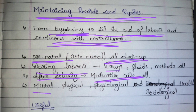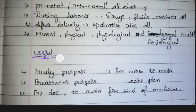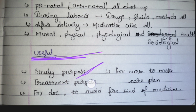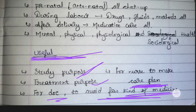We need to check and record mental health, physical health, physiological health, and sociological health — how the patient is interacting with others, whether she is normal or not. The uses of maintaining records: for study purposes (nursing students can use patient records for learning), for treatment purposes (doctors can know medication allergies or frequently used medications), for making nursing care plans, and for doctors to avoid certain medicines.